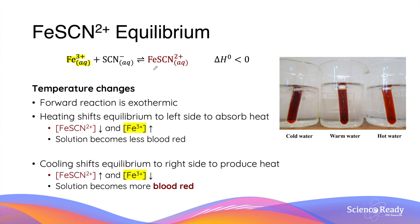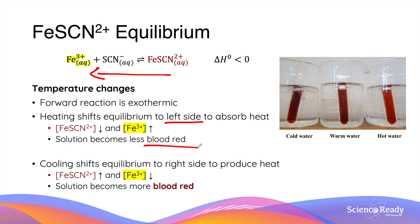The forward reaction of this equilibrium is exothermic, so heating will shift the equilibrium to the left, as the reverse reaction is endothermic and heat is absorbed from the surroundings. The movement of equilibrium to the left reduces the concentration of iron thiocyanate, and thus the solution becomes less blood red.